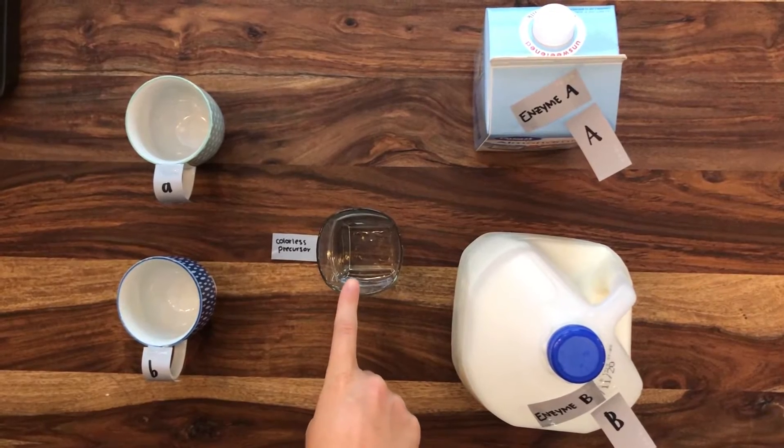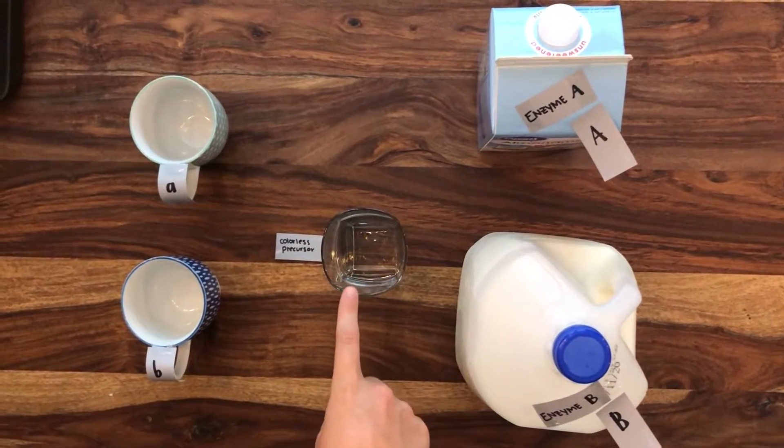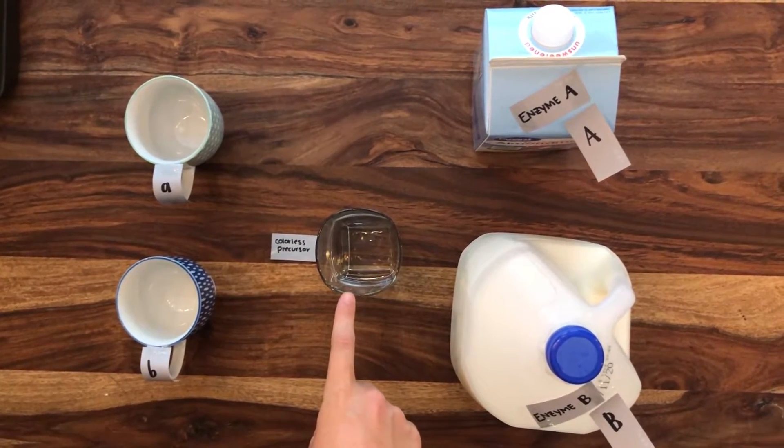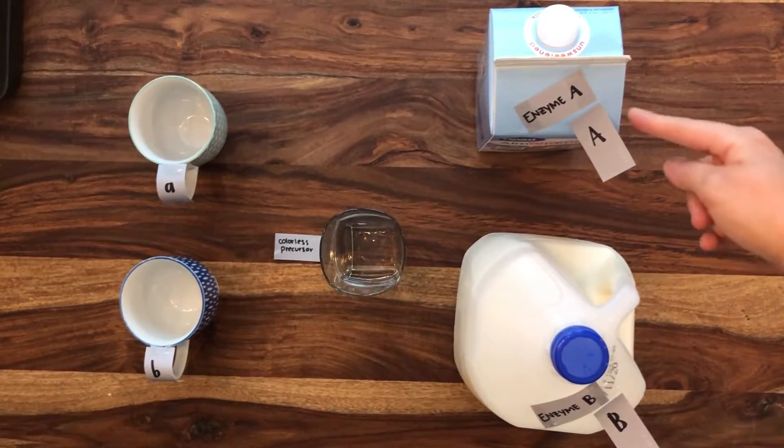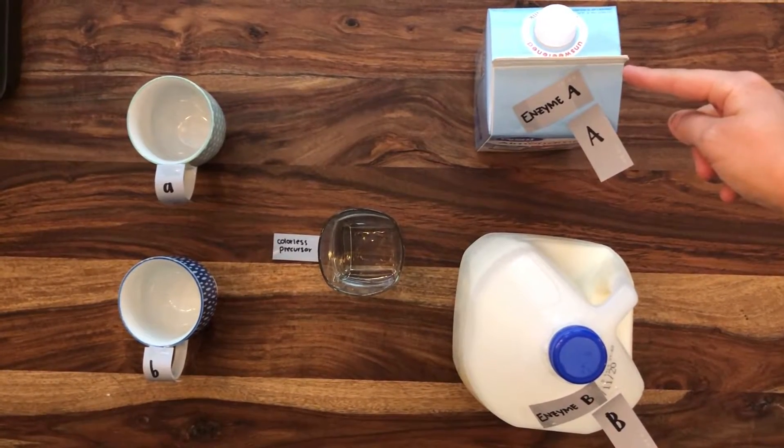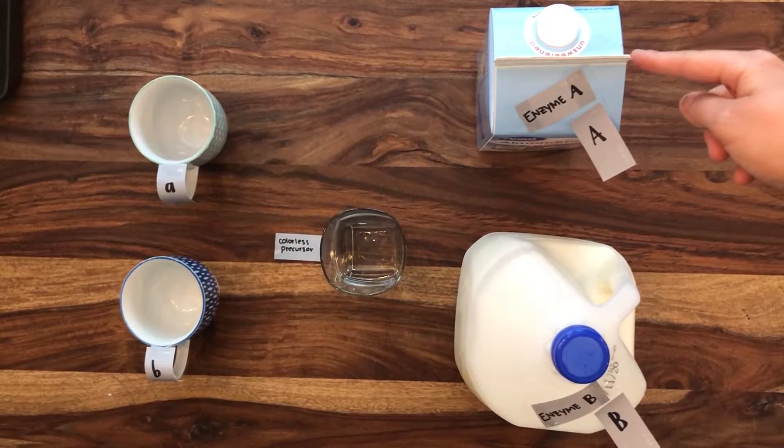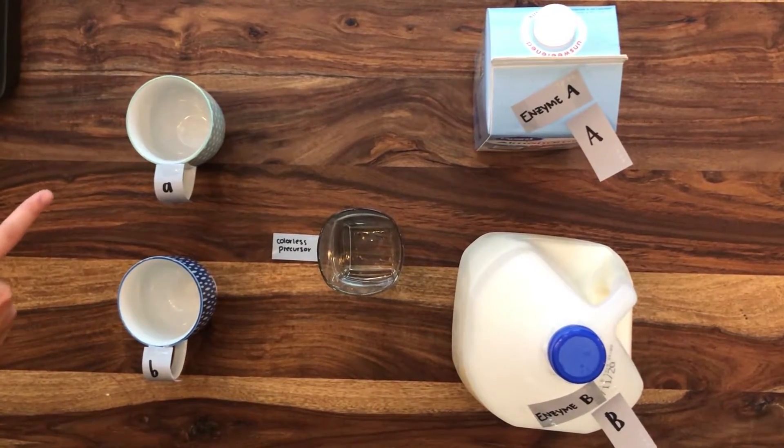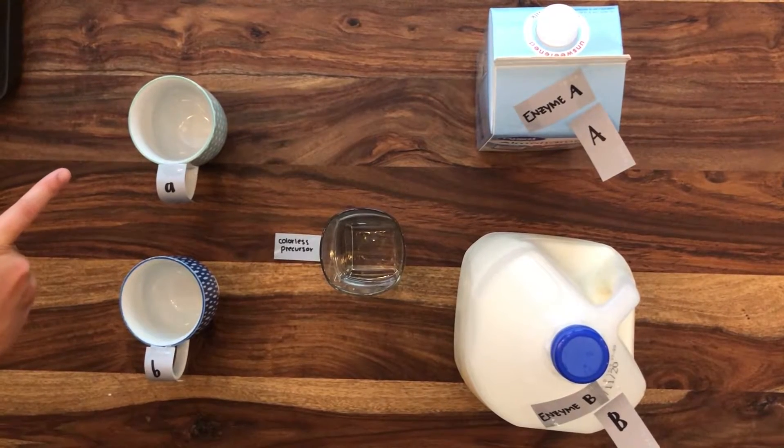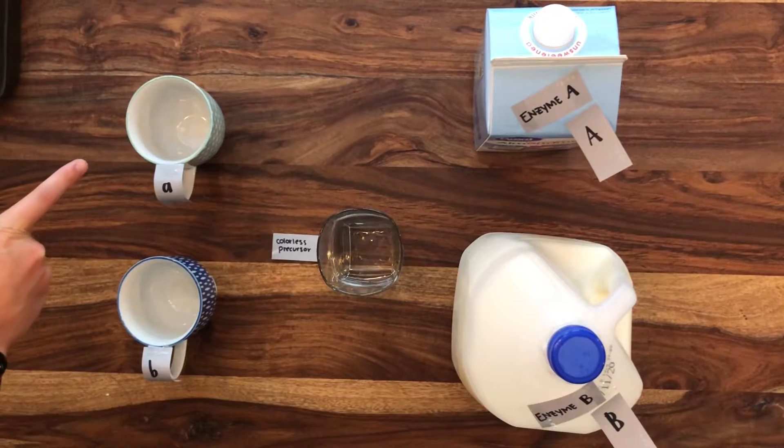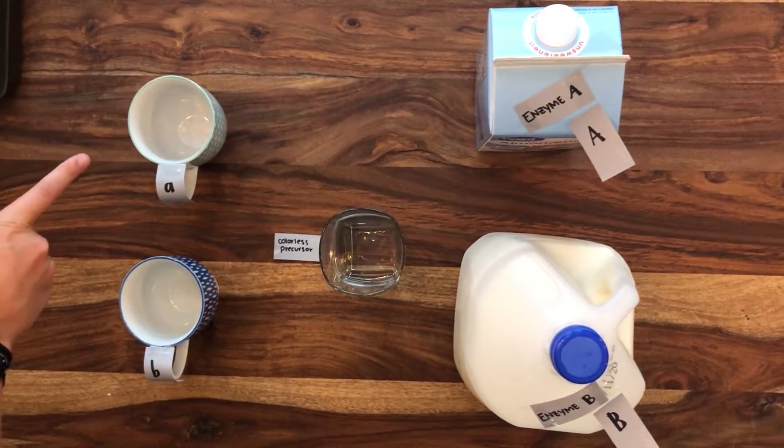This glass of water will represent a colorless precursor of a particular species of glassware. We will observe the genotypes contributing to the trait of color of liquid in this glass. This almond milk will represent enzyme A, which is produced when uppercase A allele is present at locus A in the genotype. When lowercase A allele is present, it does not contribute to the production of any enzymes altering the liquid color. This empty teal mug represents the lowercase A's contribution to the phenotype, which is nothing.